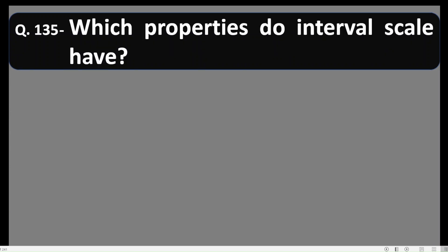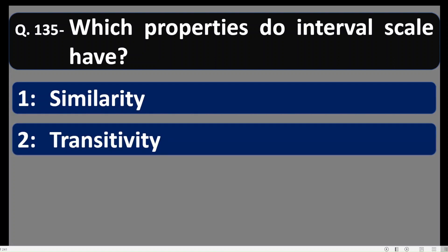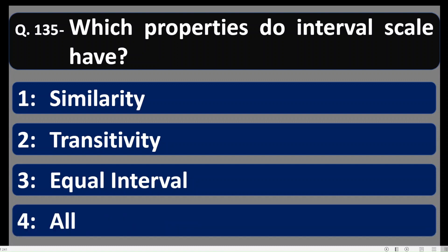Question 135: Which properties does an interval scale have? Options: 1) similarity, 2) order/ranking, 3) equal interval, 4) all of the above. Since all three properties are present in an interval scale, option number 4 — all — is correct. For more on scales of measurement, see the dedicated video on this channel.